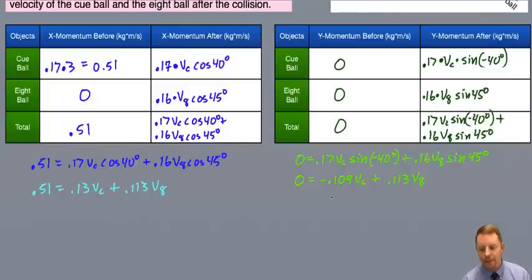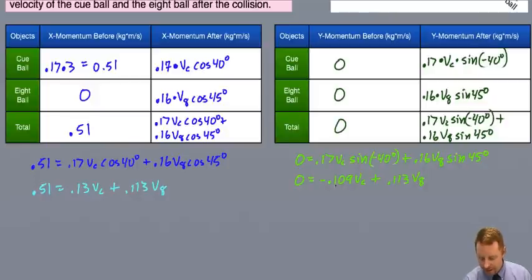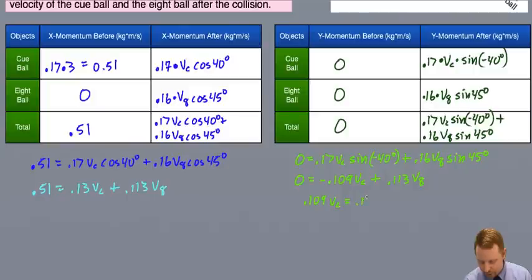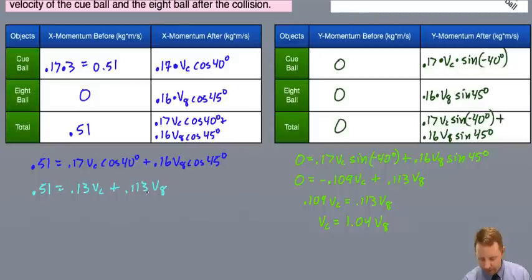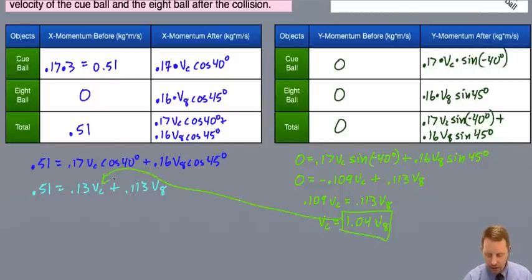To solve the system, I'll start by solving the y-momentum equation for vc. If 0 equals negative 0.109 vc plus 0.113 v8, I can rearrange by adding 0.109 vc to both sides to get 0.109 vc equals 0.113 v8. Dividing both sides by 0.109, I find that vc equals about 1.04 v8. I can now substitute this expression into the x-momentum equation.